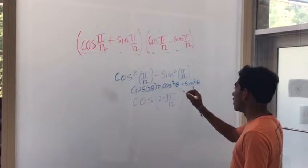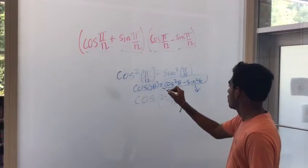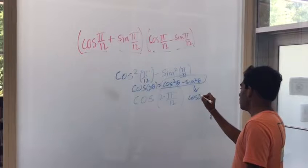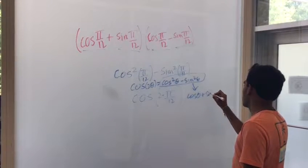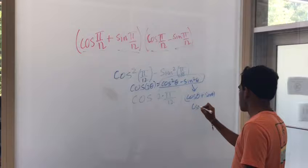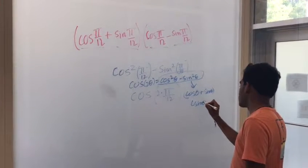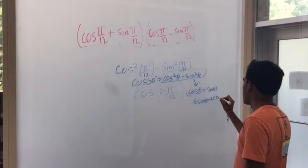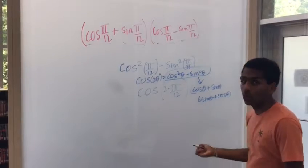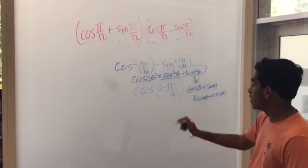This can further become (cos θ + sin θ) times (cos θ - sin θ). Or you can just write it whichever way you want. It doesn't really matter. But now, back to the problem...